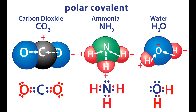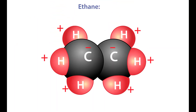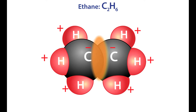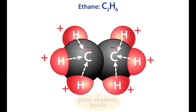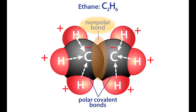Certain other compounds, such as ethane, C2H6, have both polar and nonpolar bonds. Ethane has polar bonds between the carbon and hydrogen, and nonpolar bonds between the two carbon atoms.